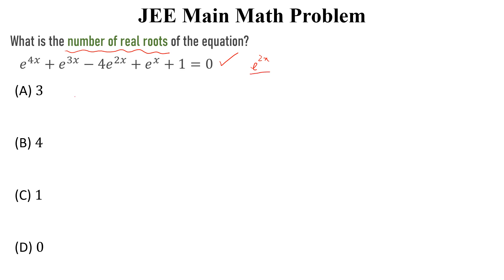So, this equation will become e to the power 2x plus e to the power x minus 4 plus 1 over e power x plus 1 over e power 2x is equal to 0.